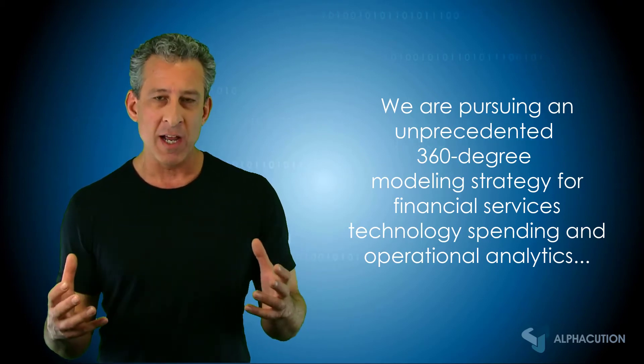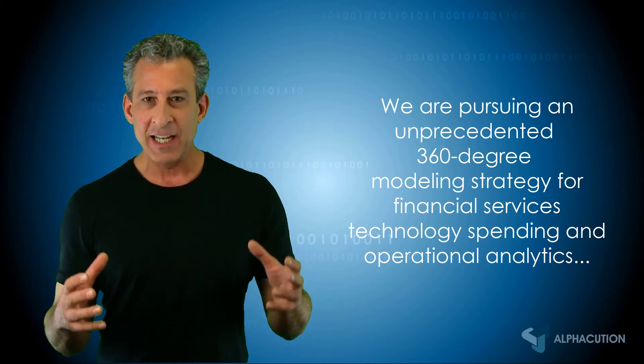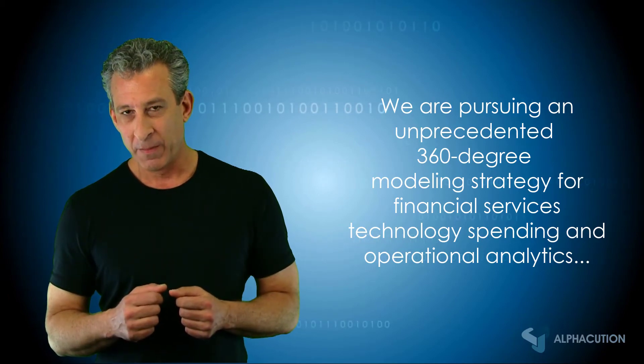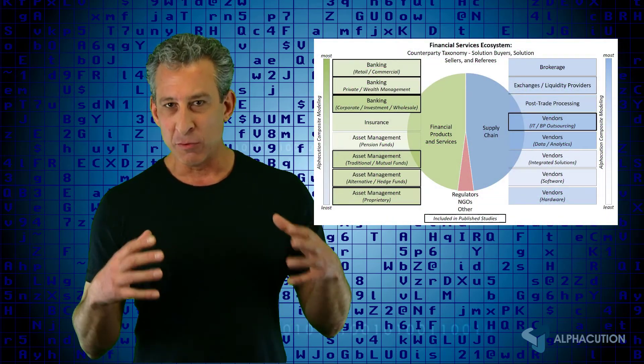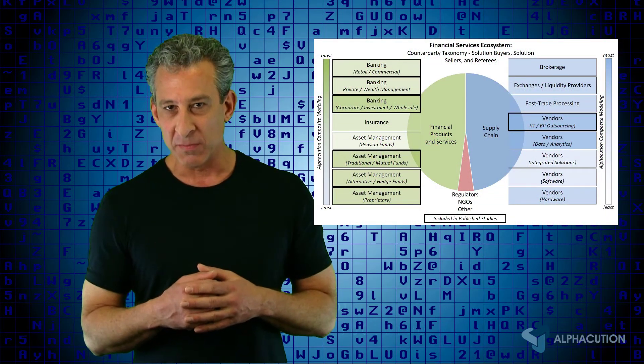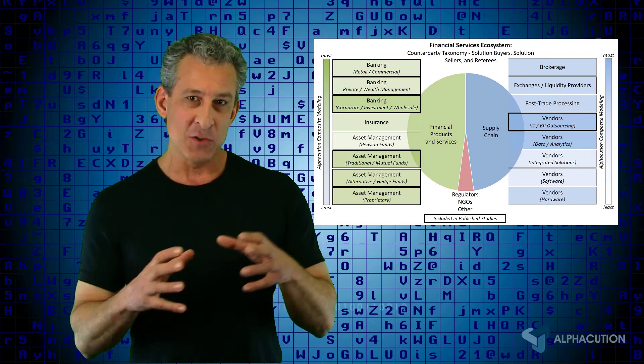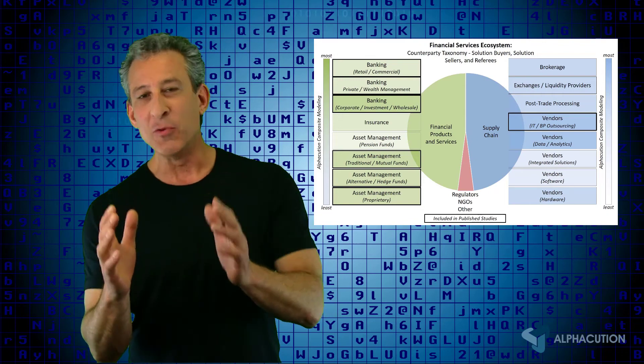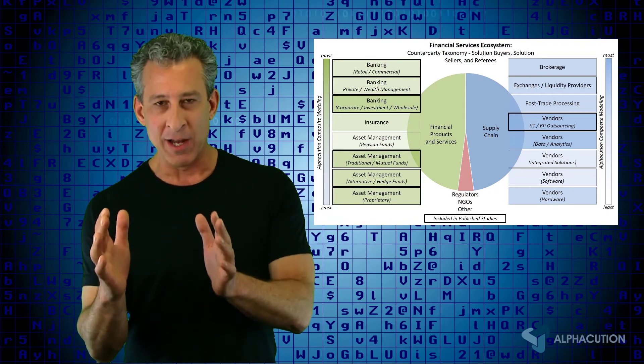We can do this in cases where we don't have observable data. We think of it kind of like solving a massive Sudoku puzzle. If we're modeling 360 degrees of the global financial services ecosystem, it turns out that in cases where we don't have observable data, we can leverage contiguous or neighboring modeling.